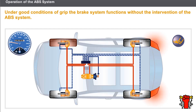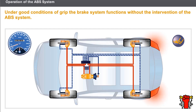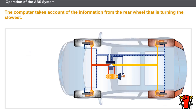If braking regulation becomes necessary, the computer sends a command to the solenoids and activates the pump. The front wheel solenoids are controlled separately, while the solenoids for the rear are controlled simultaneously. The rear axle must be braked using a force which is lower than the force used for the front axle.